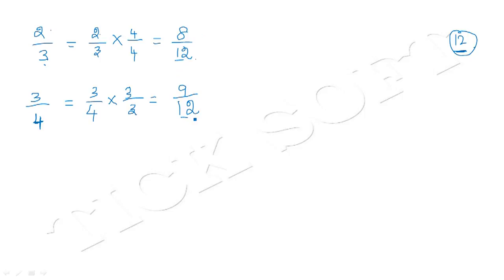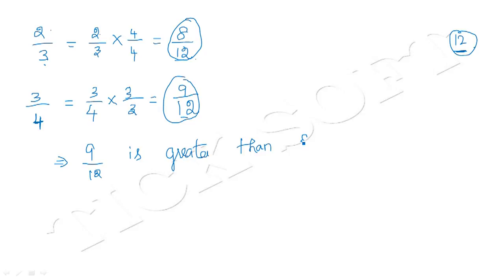Now we can easily compare these two fractions. Which one is greater? Obviously, 9 by 12 is greater than 8 by 12. The denominators are equal, so we can directly compare the numerators. Hence 9 by 12 is greater than 8 by 12. Now, 9 by 12 is an equivalent fraction of 3 by 4, because when we multiply 3 by 4 by 3 we get 9 by 12.